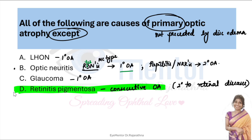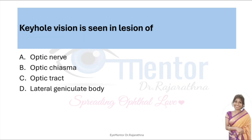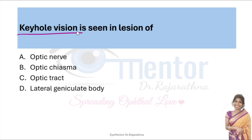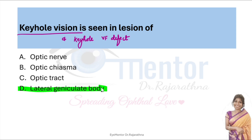Keyhole vision — everybody got it right. Keyhole vision, and also a keyhole visual field defect. Either way, your answer is going to be LGB, option D.